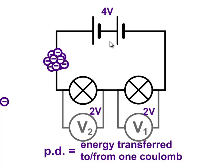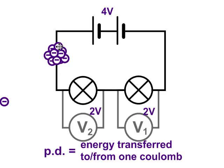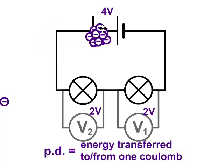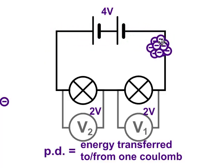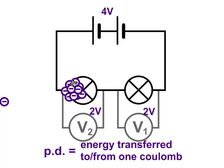This is because the energy from the supply is being divided up between the two bulbs. So the potential difference across the two components adds up to the potential difference of the supply.